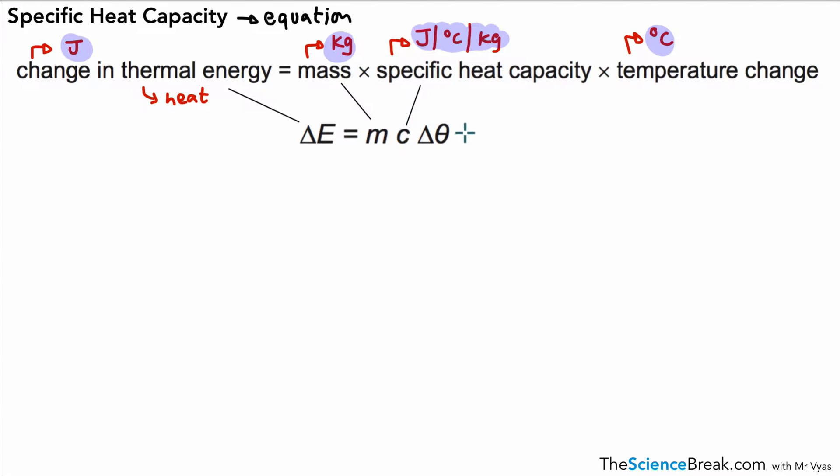That's changing thermal energy, that's mass, that's specific heat capacity, and that's temperature change. It's probably worth mentioning here that that little symbol at the end there is called theta, and it stands for the temperature. And that triangle there, often used in maths, means 'change in'—that's actually a delta. So we see the change in energy and the change in temperature in our equation. So that little triangle symbol there, delta, is a Greek letter, and the symbol on the end, theta, is also a Greek letter which means temperature.